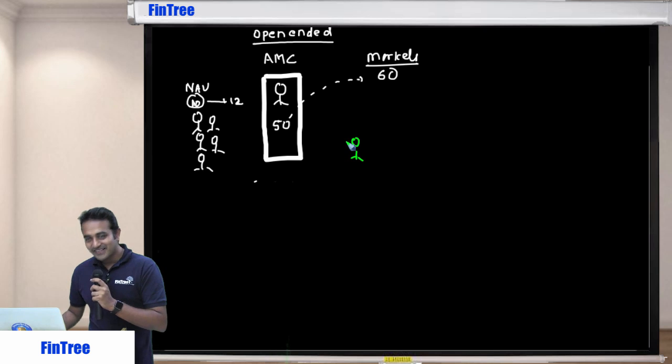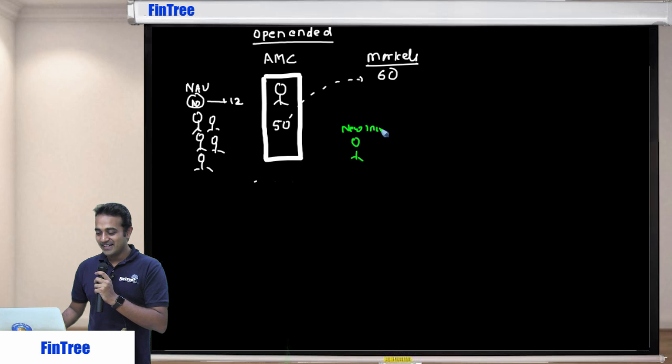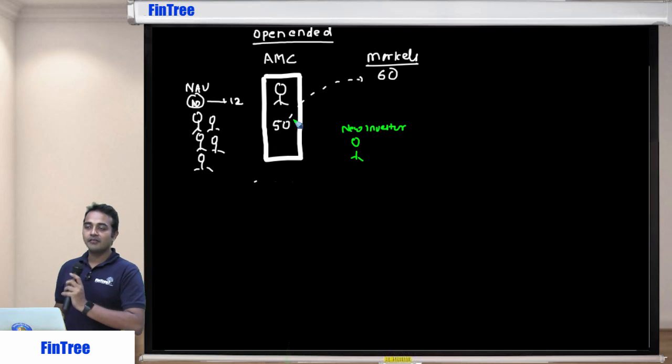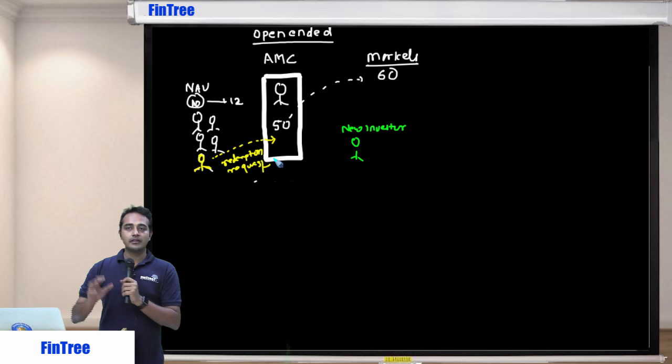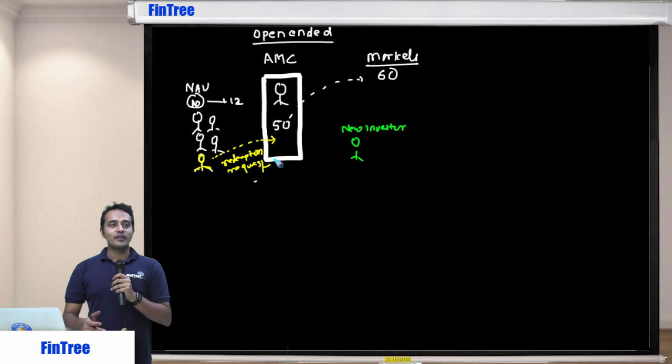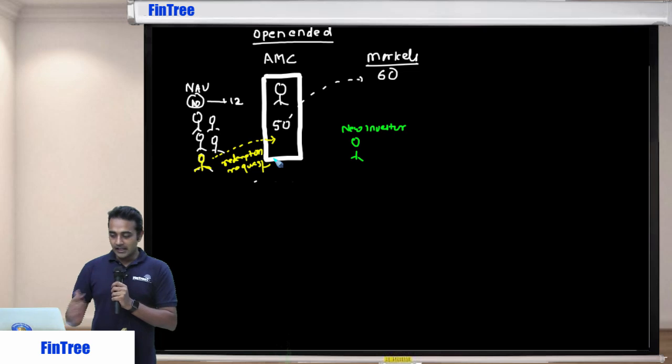Now this is a new investor willing to buy into the fund, and this investor now thinks that I don't want to remain invested, I want to sell my fund. Now in case you want to sell, you go to the asset management company and you make a redemption request. You don't go to new investors directly, you just go to the fund manager. You just fill up a form and send it across - that's called a redemption request.